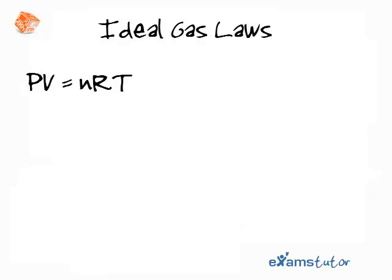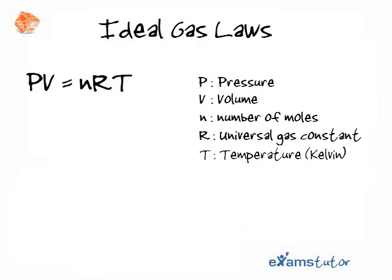This equation at the top, PV equals nRT: P is pressure, V is volume, n is the number of moles of gas that you have, R is the molar gas constant, and T is the temperature. It's important to measure the temperature in Kelvin — if you measure the temperature in centigrade or Fahrenheit or any other unit it's going to go wrong.